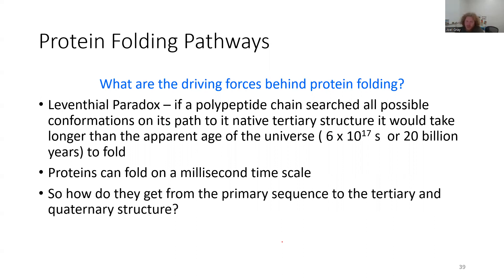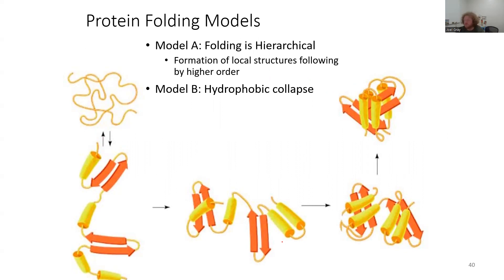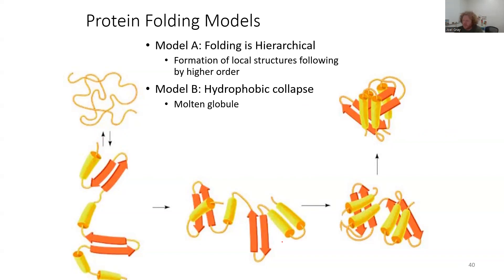How do proteins get from the primary sequence to the tertiary and quaternary structure? Model A: folding is hierarchical — local structures form first, and then those local structures lead to folding of the tertiary structure. Another theory is that the most hydrophobic regions of the protein aggregate together, and as they aggregate, the rest of the protein folds into its necessary position. In reality, it's a combination of the two: hydrophobic collapse occurs simultaneously with secondary structures forming.